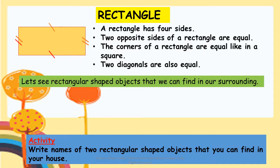Rectangle: A rectangle has four sides. Two opposite sides of a rectangle are equal. The corners of a rectangle are also equal, like in a square. Two diagonals are also equal.